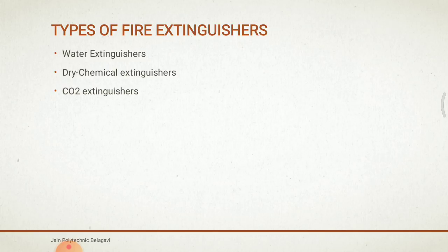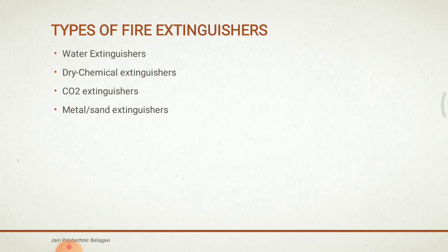There are two kinds of dry chemical extinguishers: Type BC and Type ABC. Type BC extinguishers contain sodium and potassium bicarbonate, while ABC extinguishers contain ammonium phosphate. Metal and sand extinguishers are used for flammable metals and work by simply smothering the fire. The most common extinguishing agent in this class is sodium chloride (NaCl). Powered copper metal (Cu), graphite, and basalt powders are also designed for use on lithium fires.